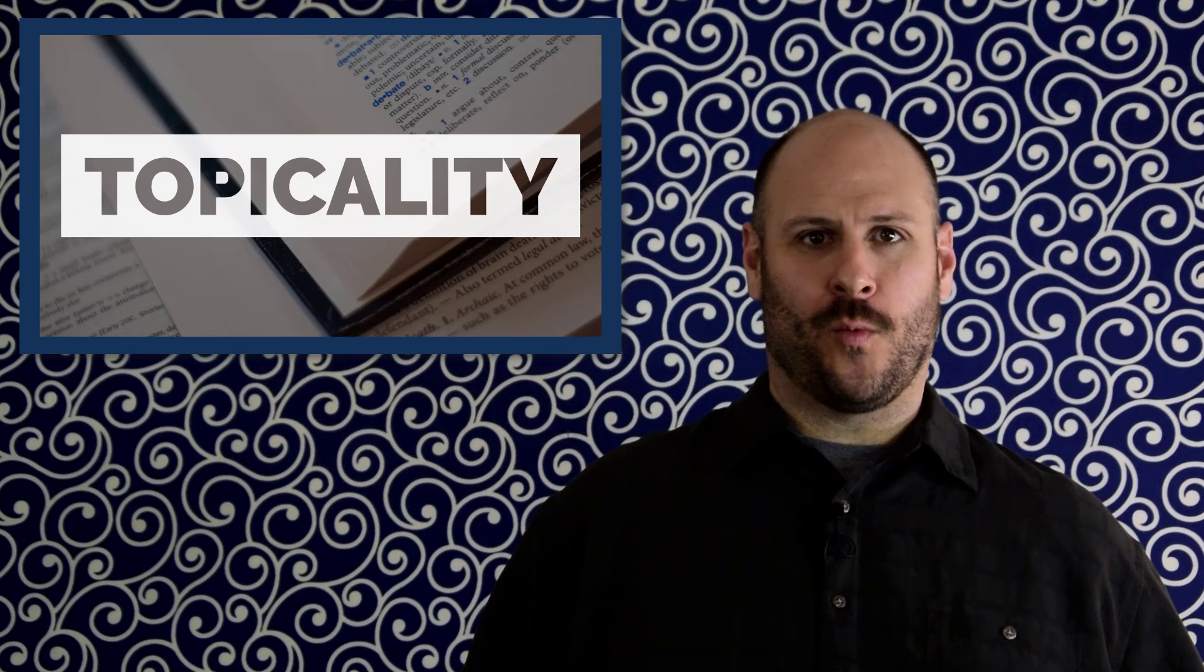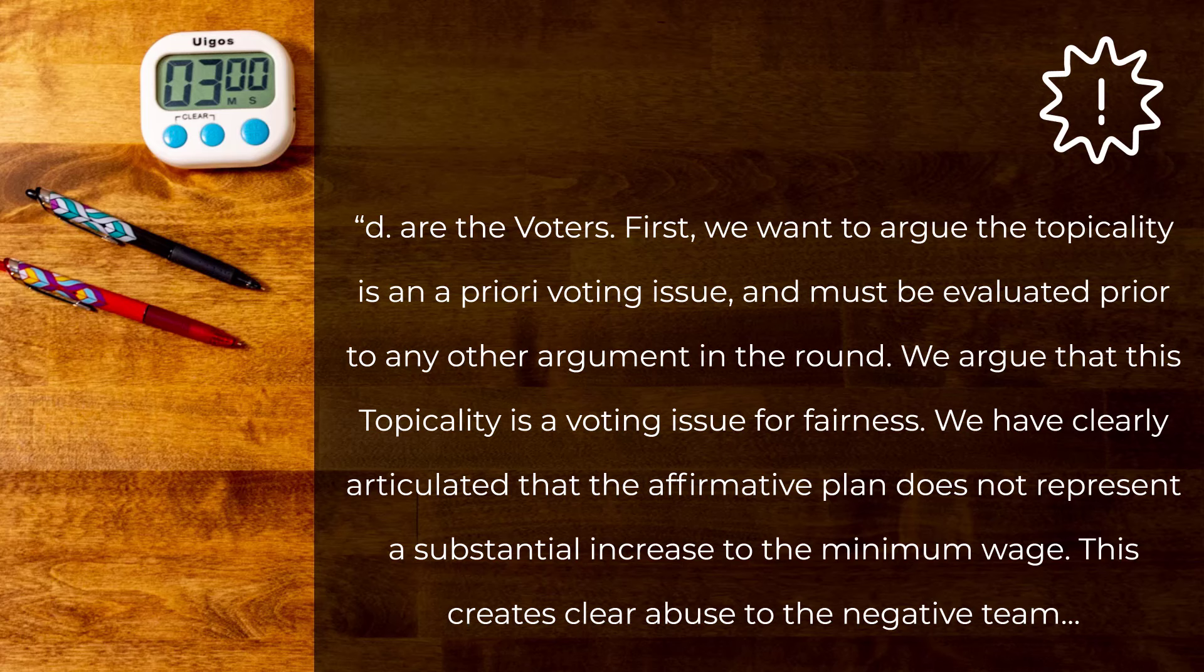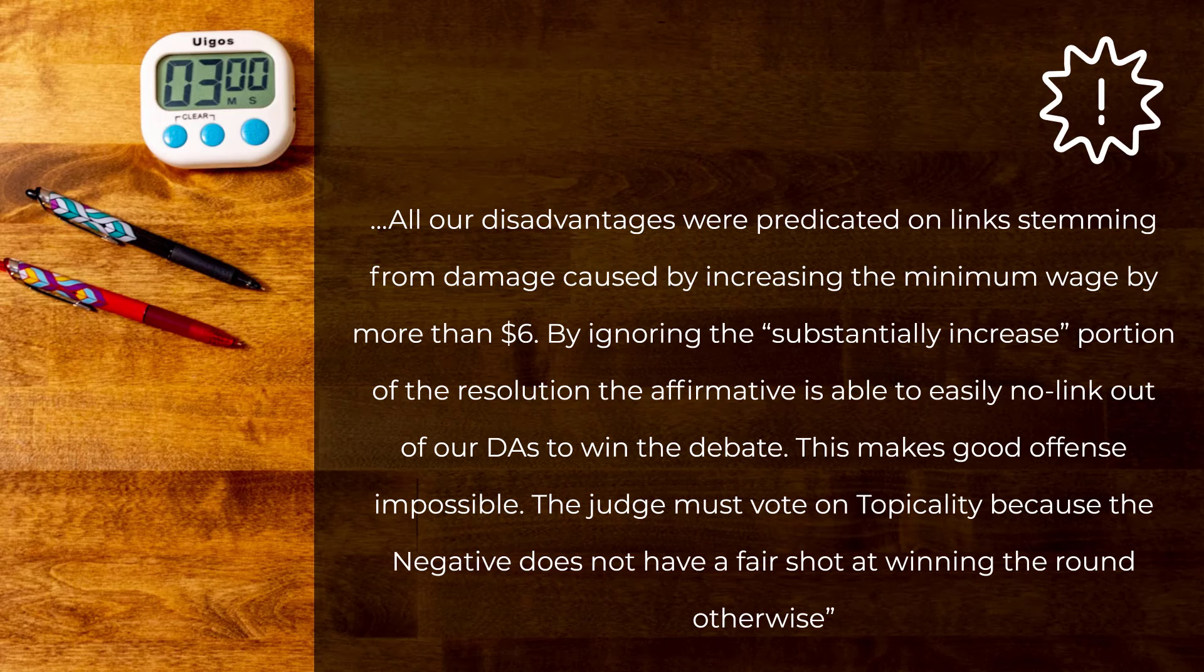Let's go back to our minimum wage example. Here, the voters might sound something like this. D are the voters. First, we want to argue that topicality is an a priori voting issue and must be evaluated prior to any other argument in the round. We argue that this topicality is a voting issue for fairness. We have clearly articulated that the affirmative plan does not represent a substantial increase to the minimum wage. This creates clear abuse to the negative team. All of our disadvantages were predicated on links stemming from damage caused by increasing the minimum wage more than $6 an hour. By ignoring the substantially increased portion of the resolution, the affirmative team is able to easily no link out of our disadvantages to win the debate. This makes good offense impossible. The judge must vote on topicality because the negative team does not have a fair shot at winning the round otherwise.